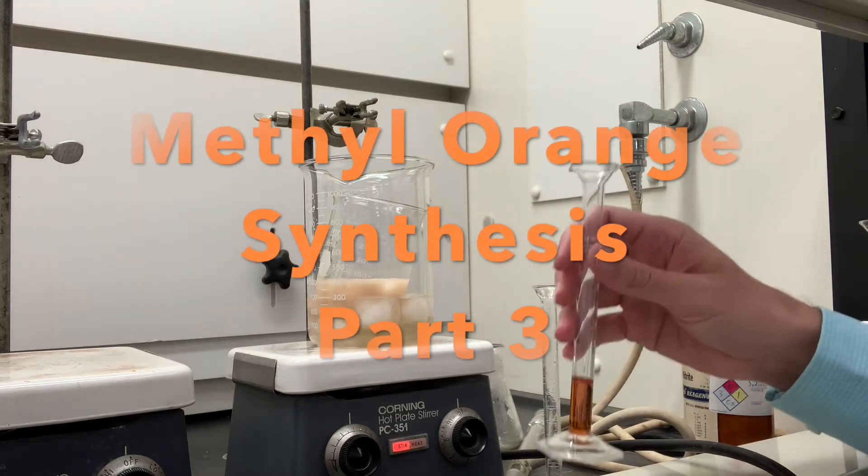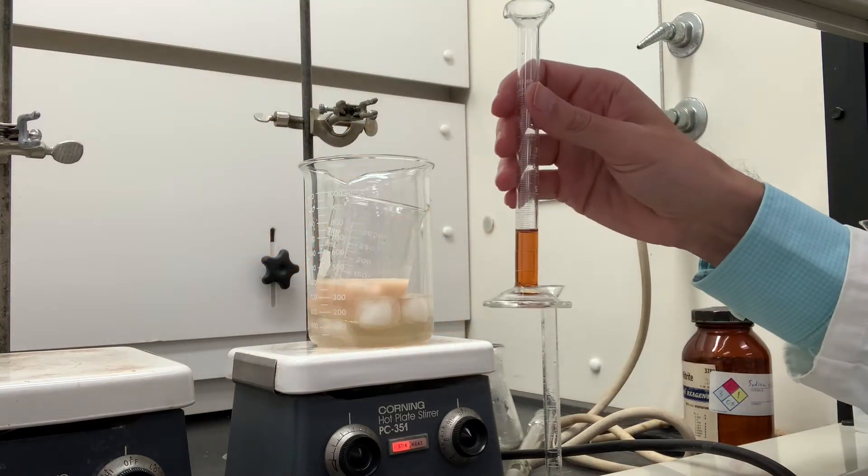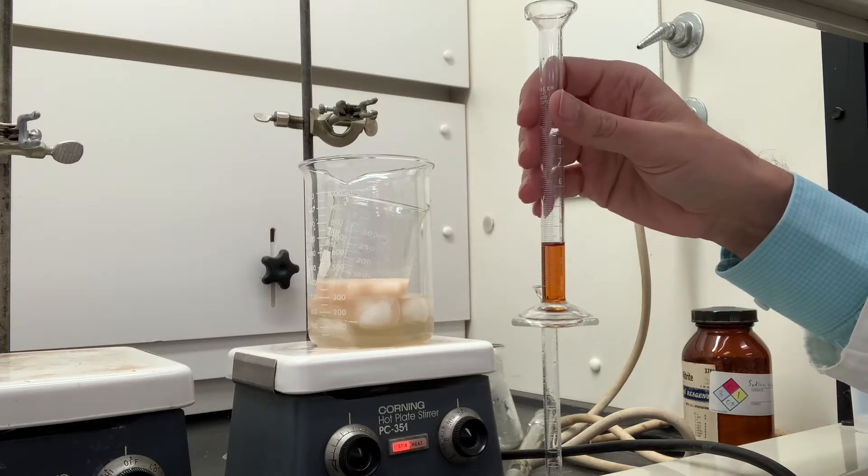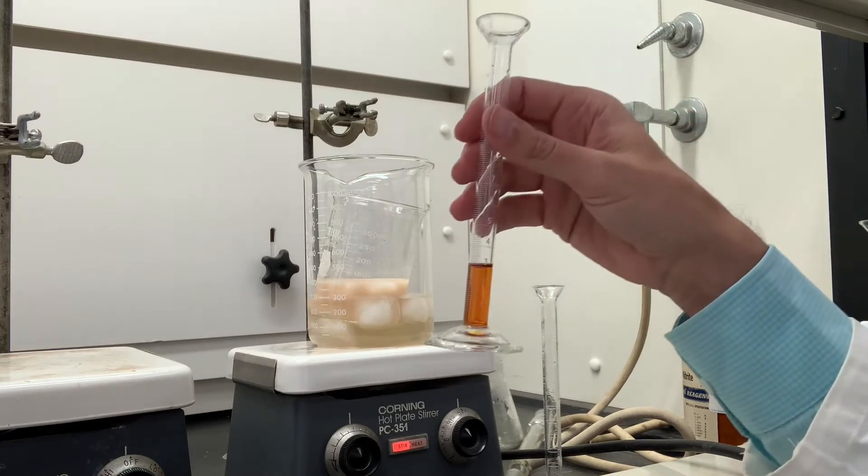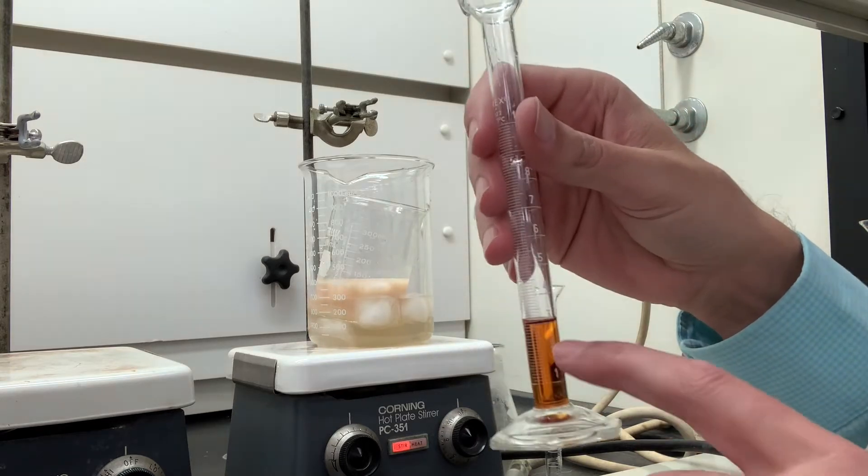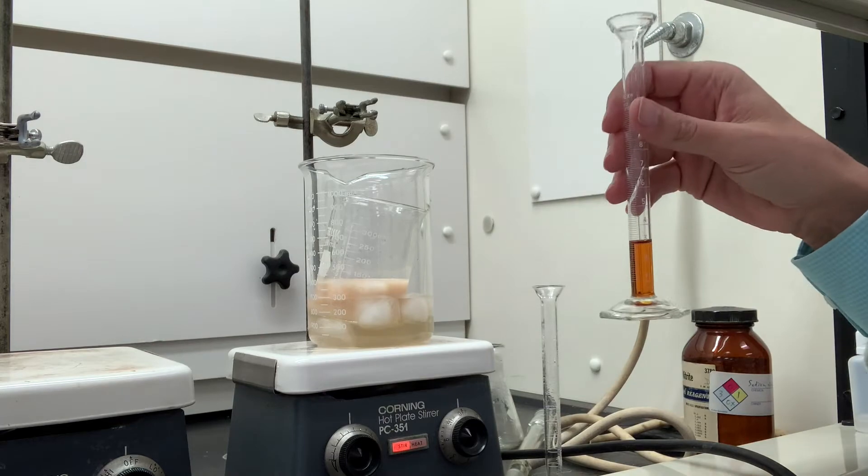Now what we want to do next is in a fume hood, measure out 2.8 milliliters of this NN dimethyl aniline using a 10 milliliter graduated cylinder as I've done here, and you want to wash that.